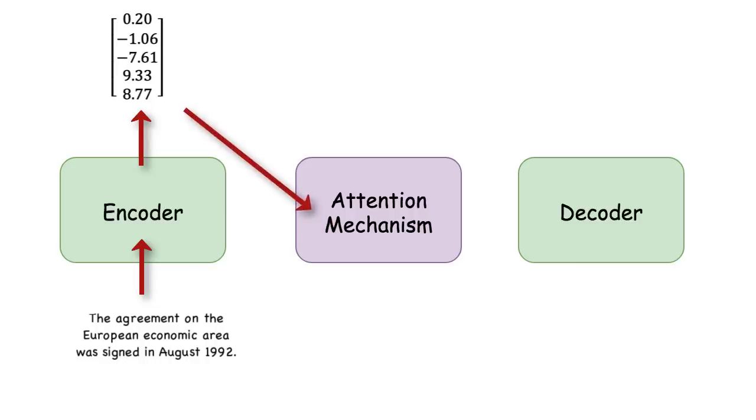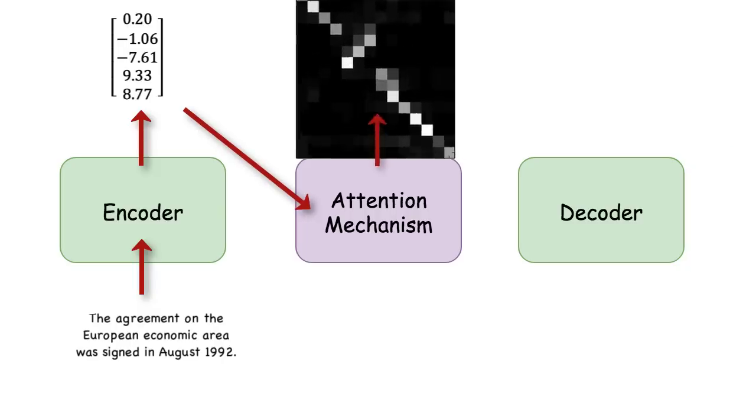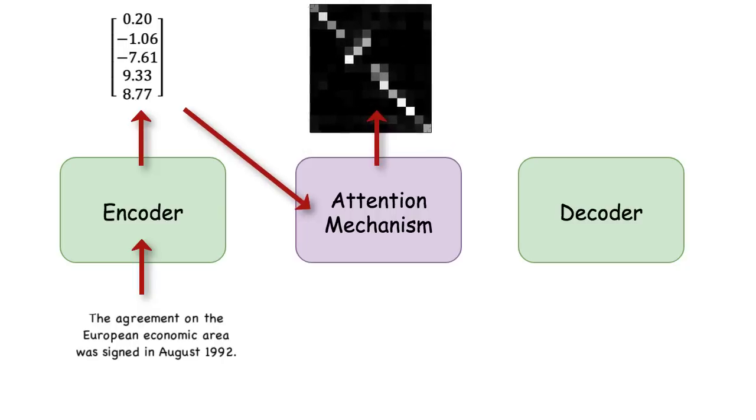Then we use an attention mechanism, basically asking which French word will be generated by which English words. The decoder will then generate the French translation one word at a time, focusing its attention on the words determined by the attention mechanism. So that's sweet.